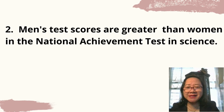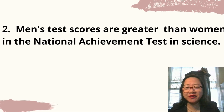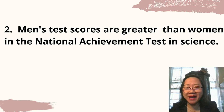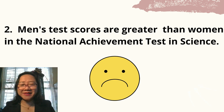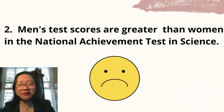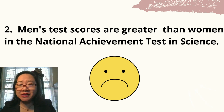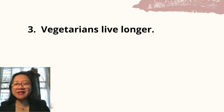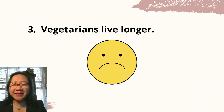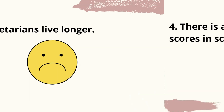Number 2: men's test scores are greater than women's in the National Achievement Test in Science. Answer: it's a bad hypothesis because it does not show the relationship between the independent and dependent variables. Number 3: vegetarians live longer. Answer: it's also a bad hypothesis because it does not show the relationship between the variables.